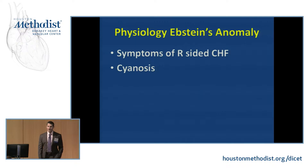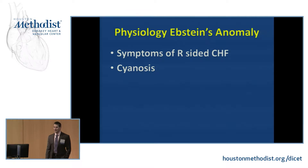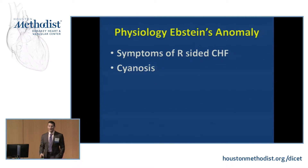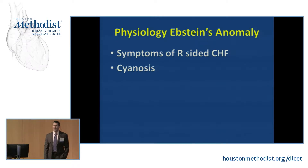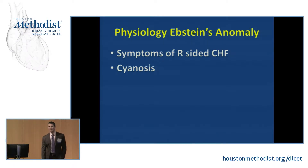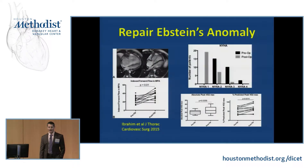Physiologically, Ebstein's patients develop symptoms of right-sided congestive heart failure, predominantly due to severe tricuspid valve regurgitation, but also in part due to having a very small right ventricle that is frequently dysfunctional. In the setting of atrial septal defects, they may become cyanotic.